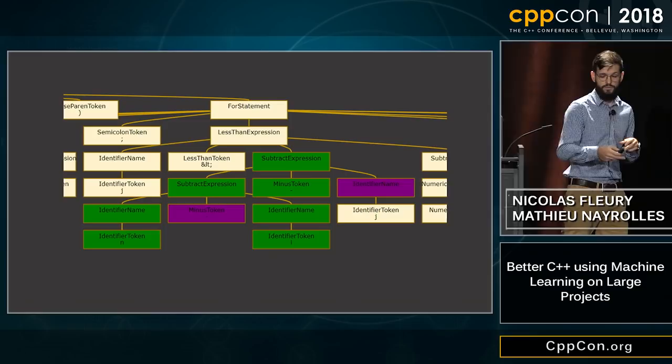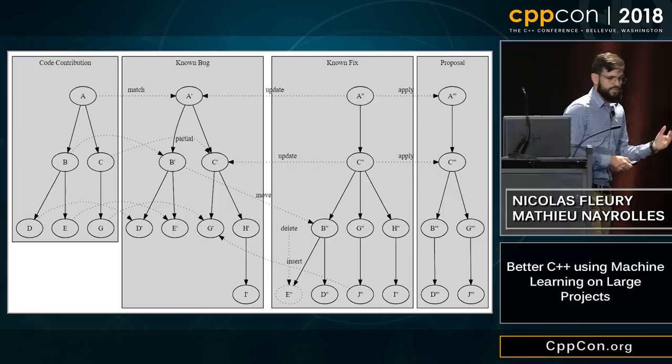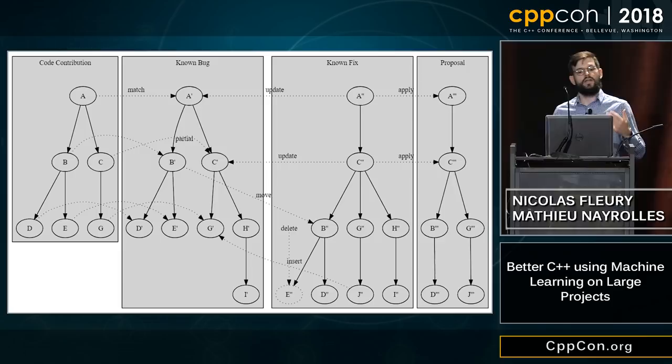Moving away from the bubble sort example to a general example of how this tech works: let's say you have your code contribution, which is a partial abstracted abstract syntax tree — A, B, C, D, A, J.